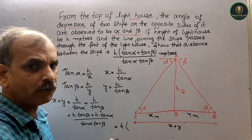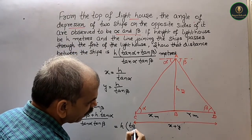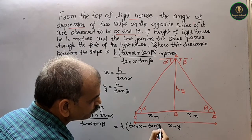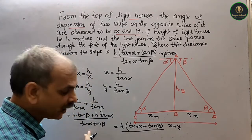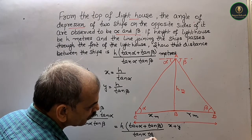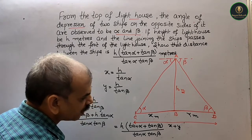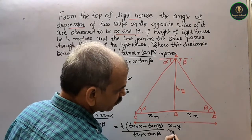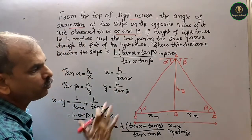Taking LCM as tan alpha · tan beta, we can write x plus y equals h(tan alpha + tan beta) over (tan alpha · tan beta), and this is the distance in meters — hence proved.